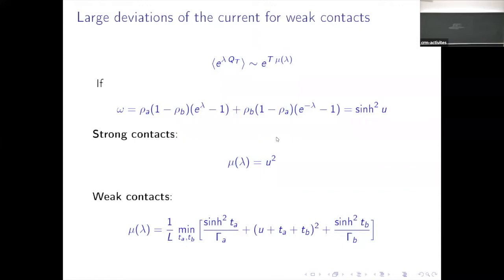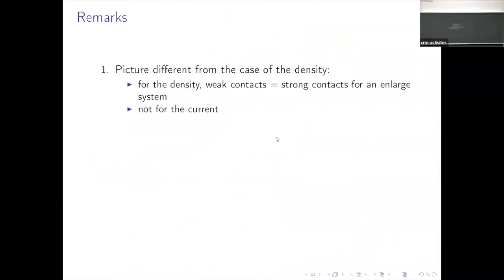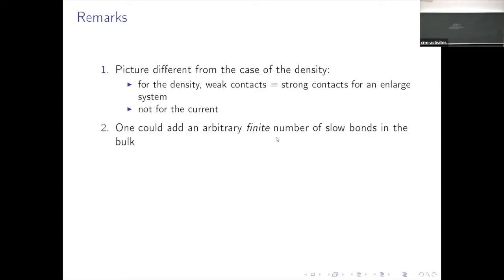The reason why this works is rather simple: when you have weak contacts, the timescale of jumps near the boundary is very slow, which means the bulk has time to equilibrate very well. By the time the next particle enters the system, inside the bulk it has time to equilibrate at a certain density rho_1. Additionally, you could have not just a single weak contact but slow bonds through the system, and you would have similar results. The results for density in the symmetric exclusion process are very specific to that model — based on computing all correlation functions — but the reasoning for the current should be valid for more general diffusive systems, because with weak contacts the system equilibrates whenever a particle enters or leaves.